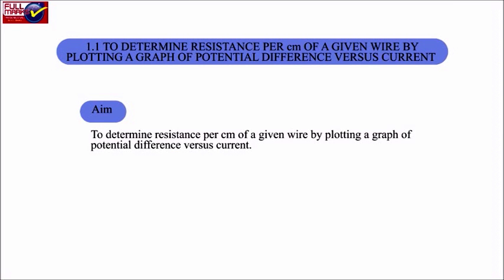Experiment 1.1: To determine resistance per centimetre of a given wire by plotting a graph of potential difference versus current.